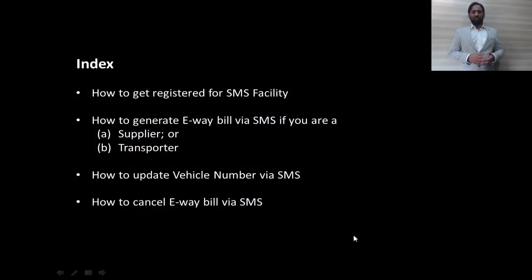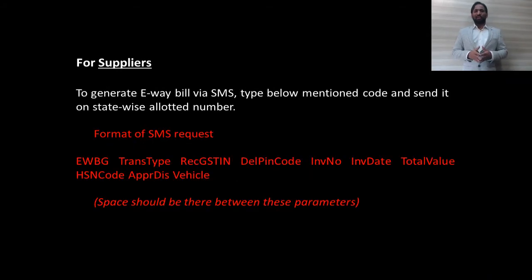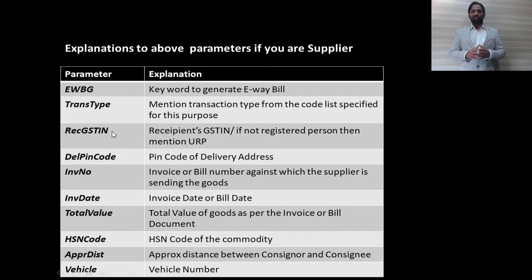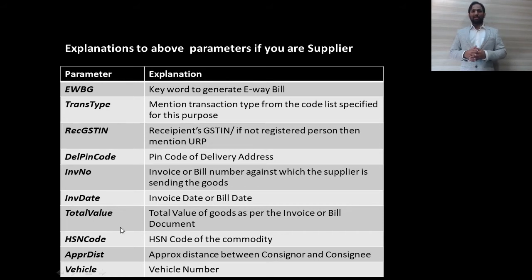When you are a supplier, you have to build the message in the following syntax. The format is: EWBG, then the transaction type code, then the recipient's GSTN — if your recipient is not registered, put URP for unregistered person — then the delivery pin code, the invoice or document number, the invoice or document date, the total value of the consignment, the HSN code, the approximate distance in kilometers, and finally the vehicle number.